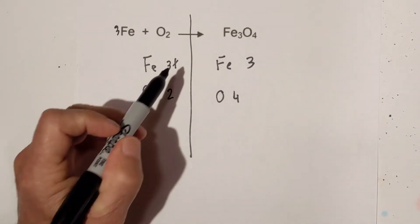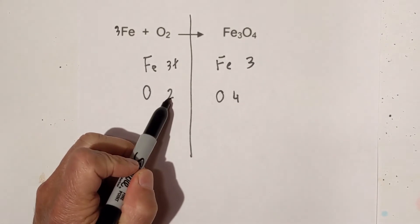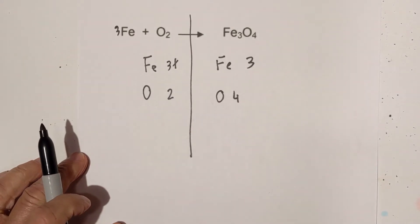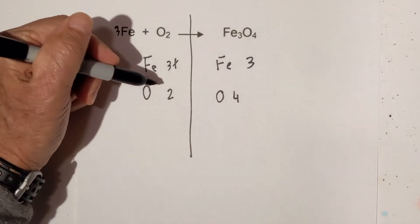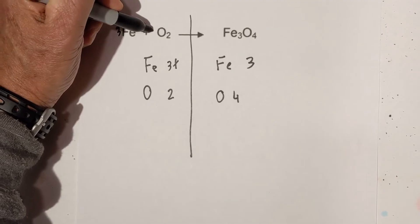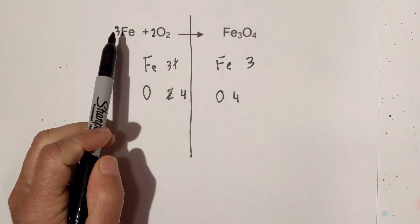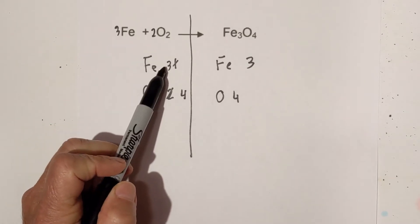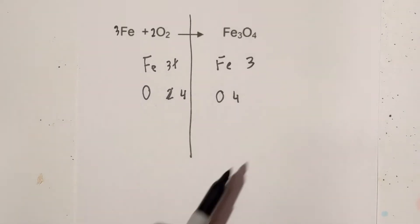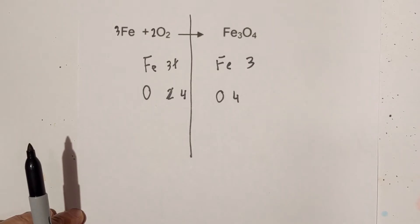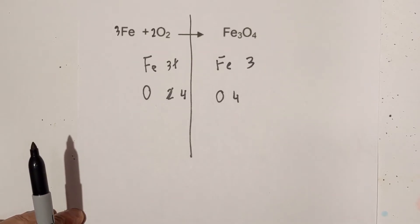Now let's look at oxygen: we have two on this side, four on the other. What's the smallest number both of these numbers will go into? That is four. So if I multiply two times two, that is four. Now we have four and four, so they balance. And it's balanced.